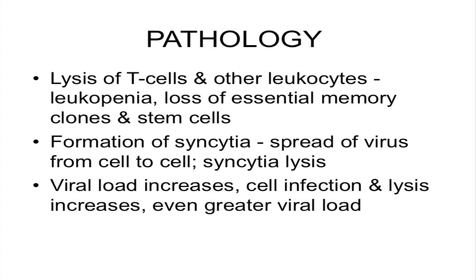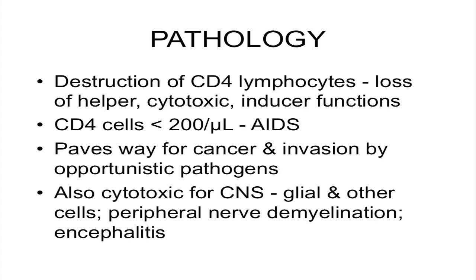If that patient's immune system gets stimulated — just go to a daycare center with lots of kids sniffling and coughing — the virus may come out and start its cycle again. Transcription of the proviral DNA occurs, messenger RNA is translated into the proteins the virus needs to assemble itself, it buds out and lyses the cell. Lysis of T cells and other leukocytes causes leukopenia, loss of essential memory clones and stem cells, and formation of syncytia that allow the virus to spread cell to cell. Viral loads start increasing, cell infections increase, giving even greater viral loads. Once you reach 200 CD4 cells per microliter, that meets the definition of AIDS, paving the way for various infections and cancers.